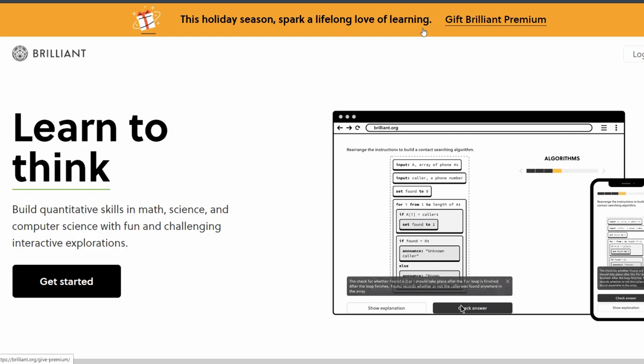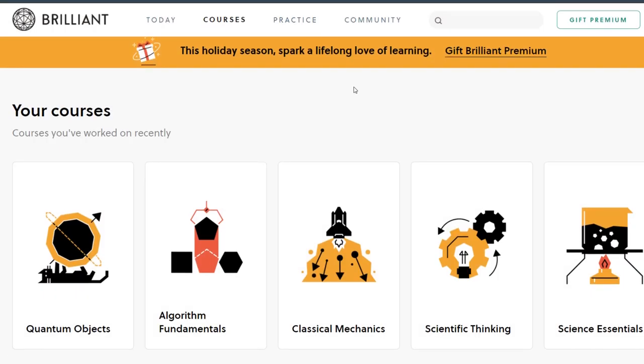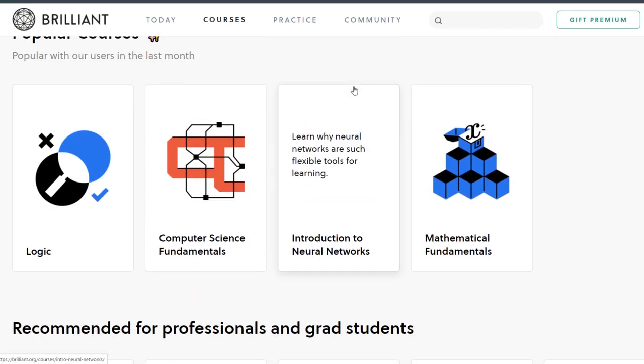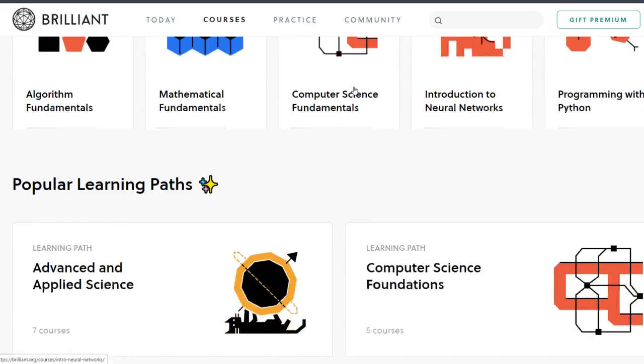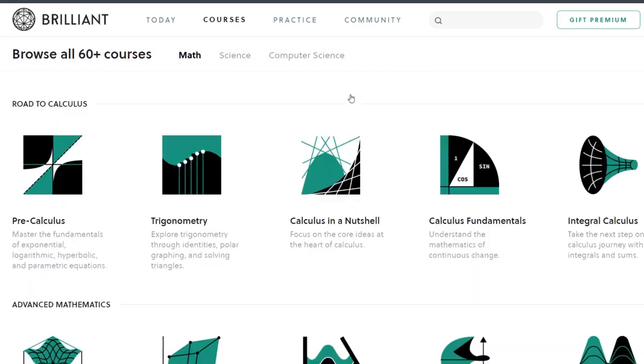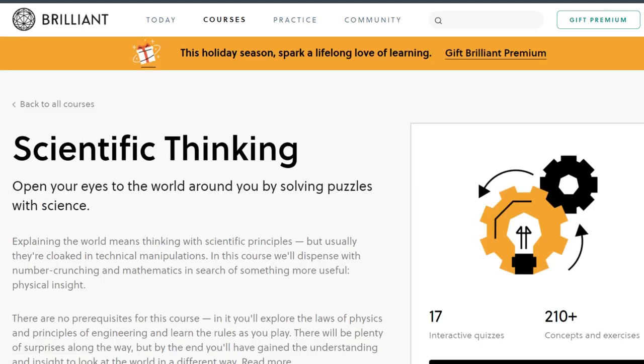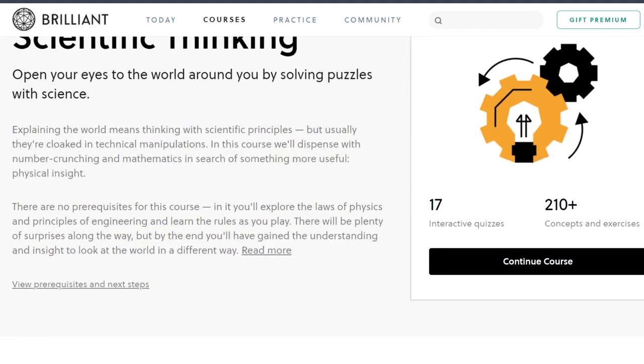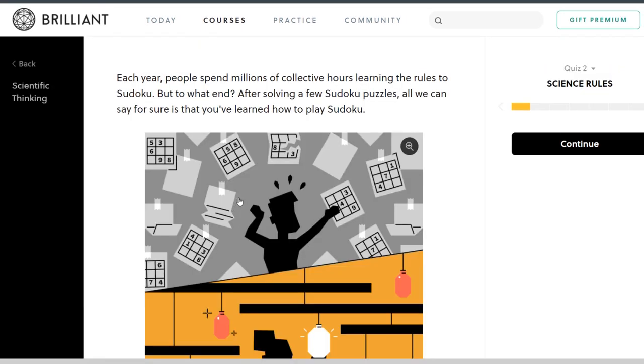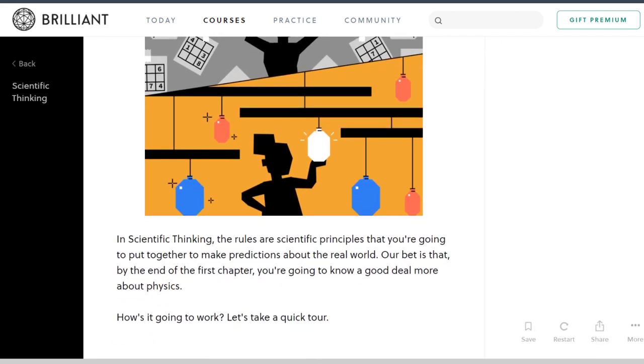If you know an inquisitive investigator that loves asking why, our partner, Brilliant, may be just the thing for you and them. Brilliant is a problem-solving-based website and app with a hands-on approach, with over 60 interactive courses in math, science, and computer science, like their course on Scientific Thinking, which helps show scientific principles and how valuable they are to have in your problem-solving toolbox. It's a great course to introduce you to Brilliant's fun and thought-provoking approach to learning, and from there you can go on to any of their 60-plus other great courses.